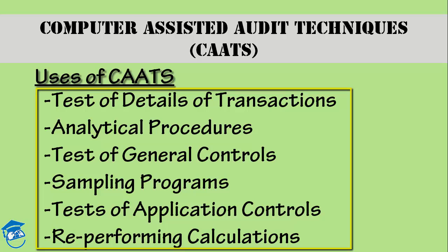Next comes the test of general controls. For example, I can test the setup and configuration of the operating system, or I can check access procedures to any program libraries by using code comparison software — to check whether the version of the program in use matches the version approved by management. You can check whether the company is using the latest version and whether it has been approved by management, and you can do all that if you have CATs in place.